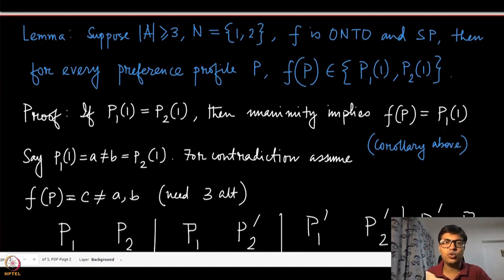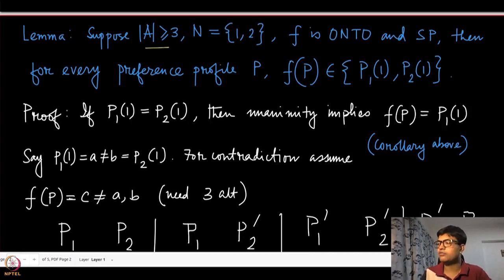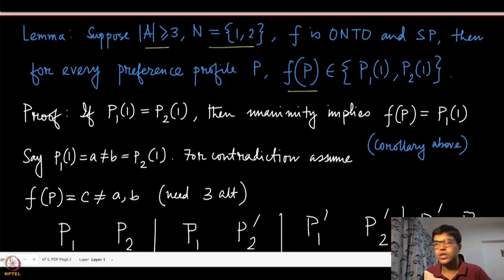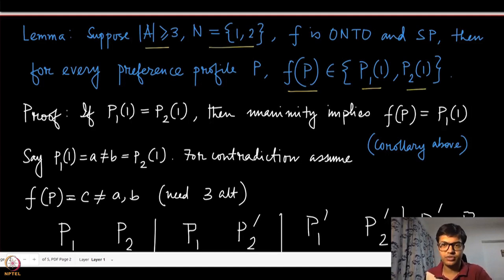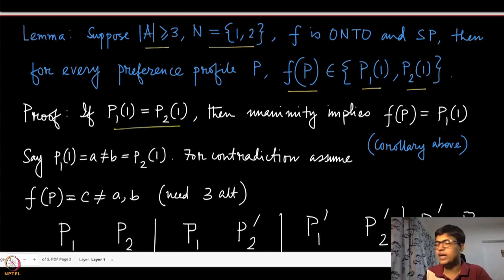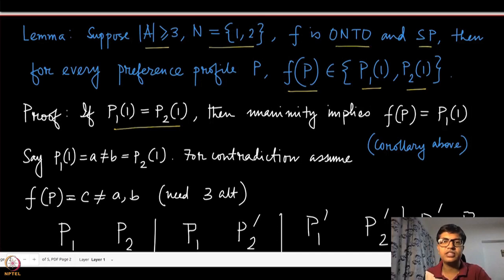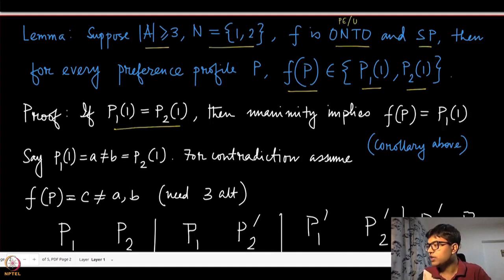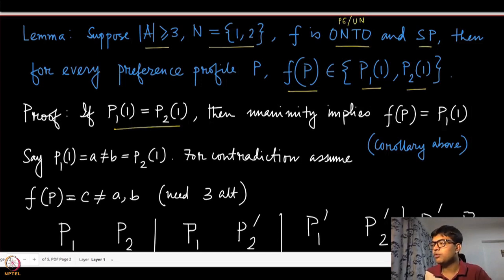So in order to prove it, let us go in steps. The first sub-result — the lemma — is: if we have three or more alternatives and two agents one and two, and f is onto and strategy-proof, then for every preference profile we can conclude that the outcome will either be the topmost alternative of player one or the topmost alternative of player two. It cannot be any other alternative.